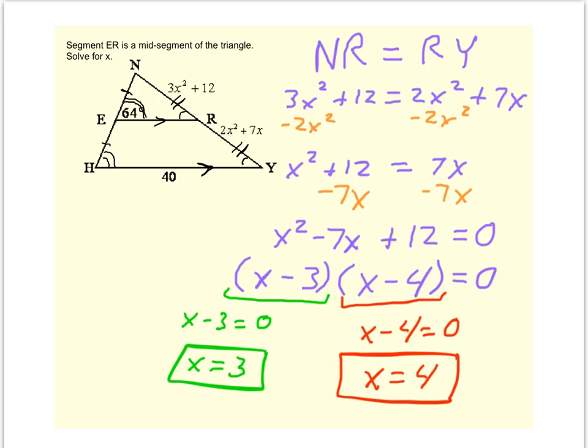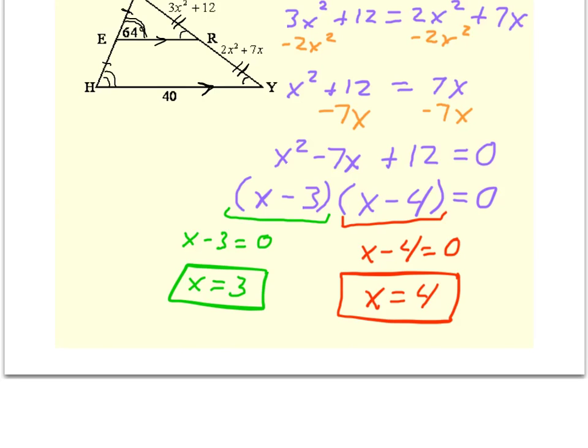So now we have two potential answers. Let's just go through and make sure that the side lengths make sense geometrically as well as algebraically. So I'll take this value of x. Maybe I'll try x equals 3 first. And I'll substitute it in for the values of 3x squared plus 12 and 2x squared plus 7x. Both of those end up being 39. So I know that x equals 3 is a possible answer.